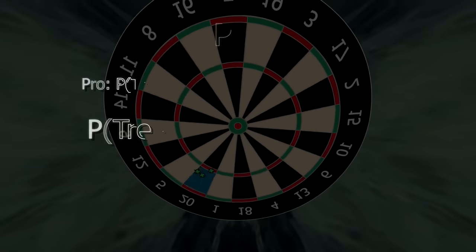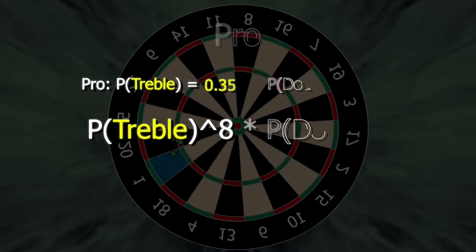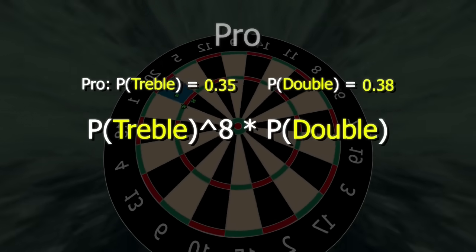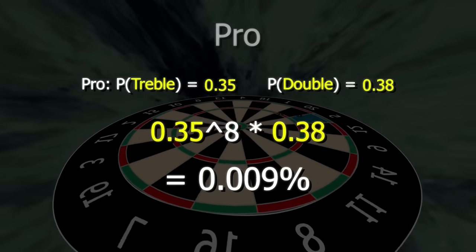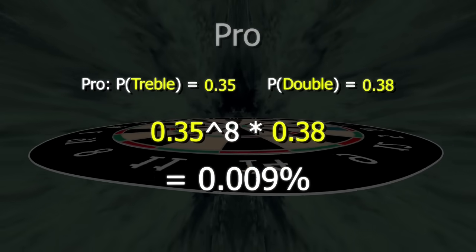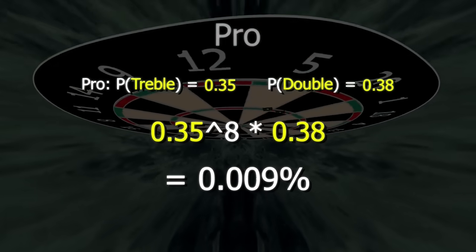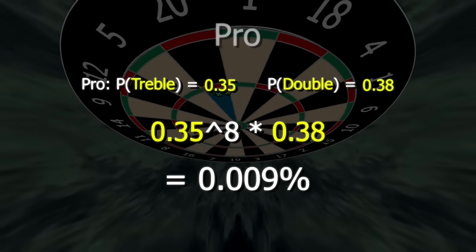So that's eight trebles and one double without missing a single dart. So for the pro player, we can take the treble likelihood, 35%, to the power of eight, multiplying it by the double likelihood, 38%, to get 0.009%, or roughly one in 10,000. So if you threw one leg every single minute, it would take an average of 166 hours to get a nine dart. That's seven days of non-stop throwing.